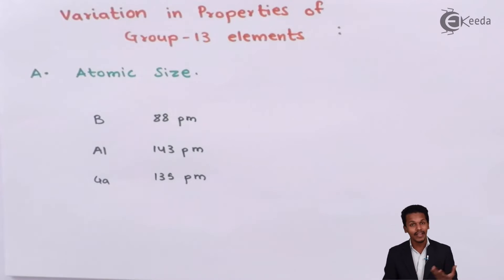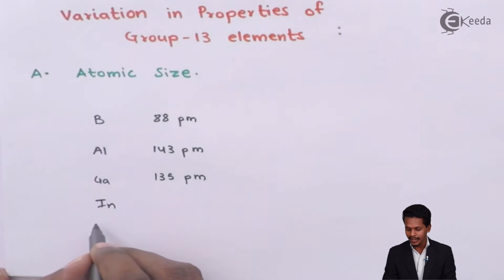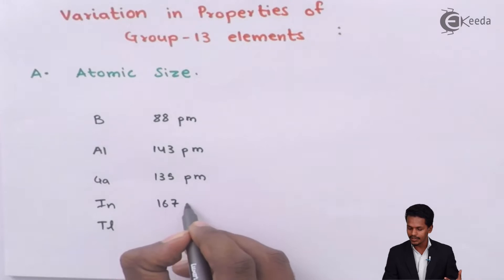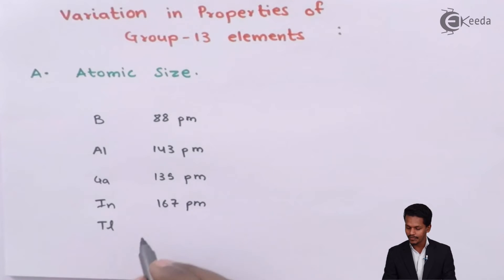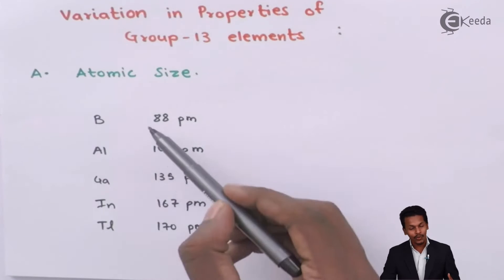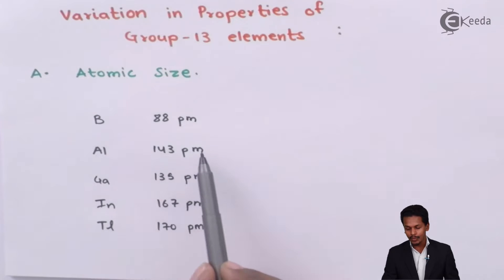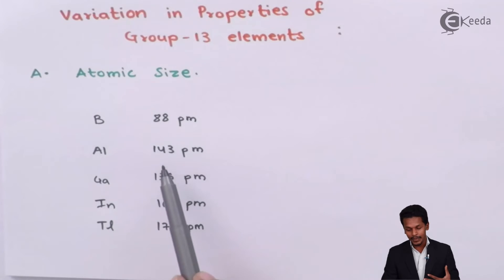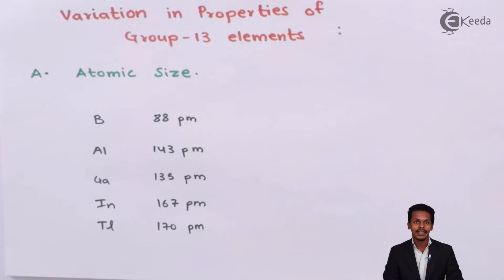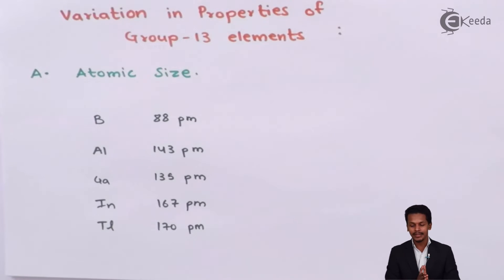After Gallium, we have Indium and ultimately Thallium. Indium has an atomic size of 167 pm, and Thallium is found to be 170 pm. So the atomic size goes on increasing in a regular pattern from Indium onwards. But at Gallium, it decreases because of the d electrons present in the valence shell. That is the variation in atomic size we have observed.